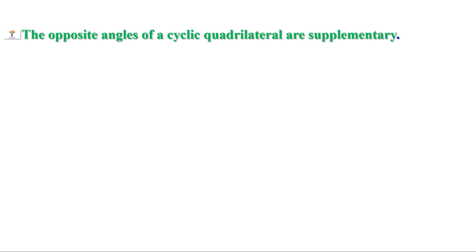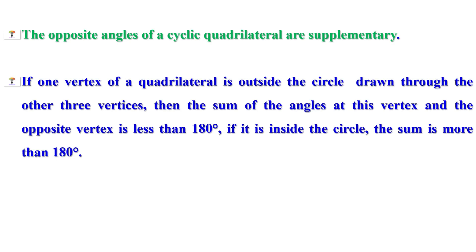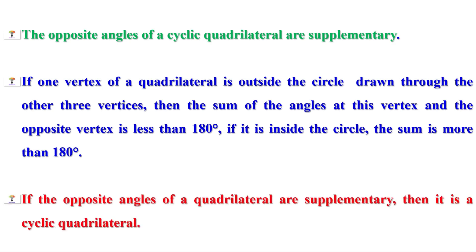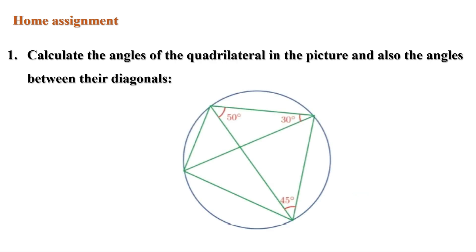Today we have learned three points: the opposite angles of a cyclic quadrilateral are supplementary; if one vertex of a quadrilateral is outside the circle drawn through the other three vertices, the sum of the angles at this vertex and the opposite vertex is less than 180 degrees; if it is inside the circle, the sum is more than 180 degrees; and if the opposite angles of a quadrilateral are supplementary, then it is a cyclic quadrilateral. There is a homework problem: calculate the angles of the quadrilateral in the picture and also the angles between the diagonals. In the next video, we shall discuss the remaining problems. Till then, bye.